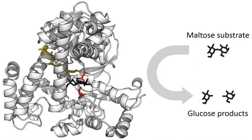Enzymes serve a wide variety of functions inside living organisms. They are indispensable for signal transduction and cell regulation, often via kinases. They also generate movement, with myosin hydrolyzing ATP to generate muscle contraction, and also transport cargo around the cell as part of the cytoskeleton. Other ATPases in the cell membrane are ion pumps involved in active transport. Enzymes are also involved in more exotic functions, such as luciferase generating light in fireflies. Viruses can also contain enzymes for infecting cells, such as the HIV integrase and reverse transcriptase, or for viral release from cells, like the influenza virus neuraminidase.